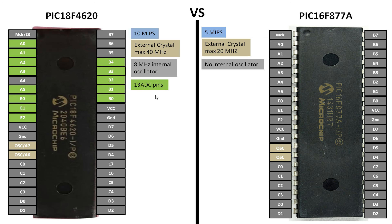The next thing is analog-to-digital conversion pins, which are very important in any microcontroller when using sensors, modules, or for automation. The PIC18F4620 has 13 ADC pins: A0, A1, A2, A3, A5, E0, E1, E2, B4, B3, B2, B1, and B0 — spanning Port B, Port E, and Port A, bringing the total to 13 ADC pins. While the PIC16F877A has only 8 ADC pins: A0 to A5 (note A4 is not an ADC pin), and then E0, E1, and E2.